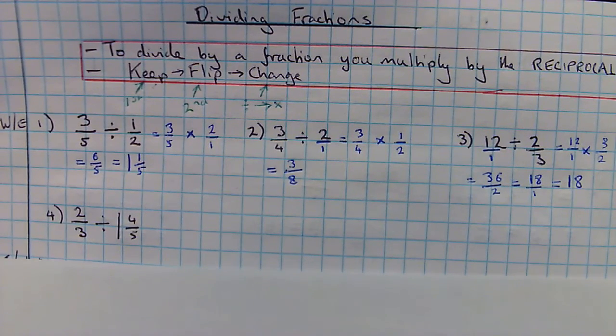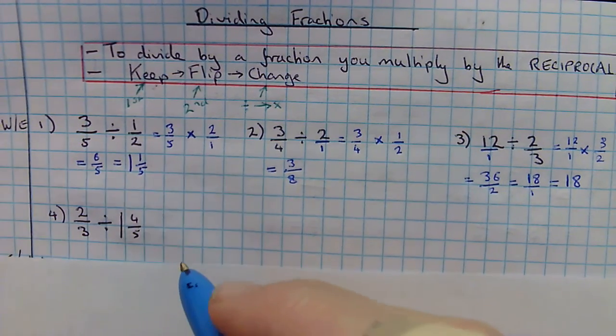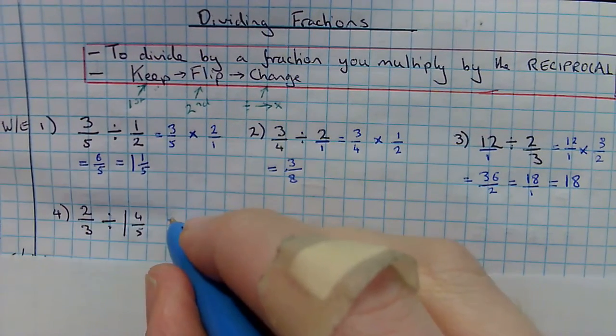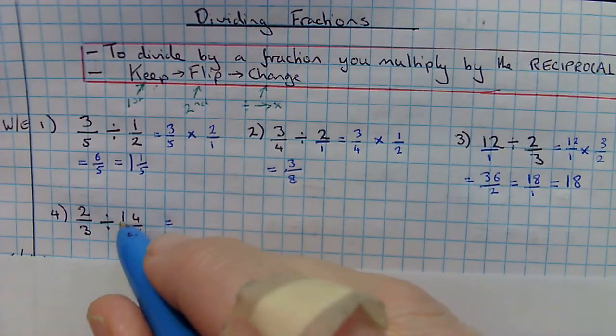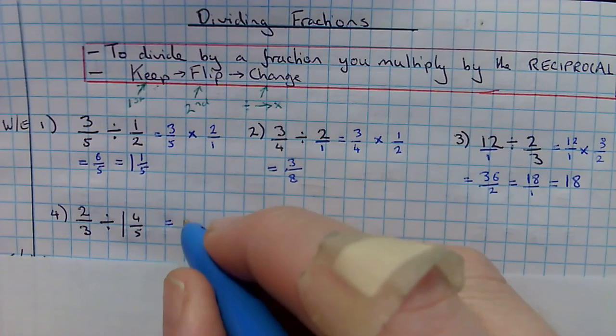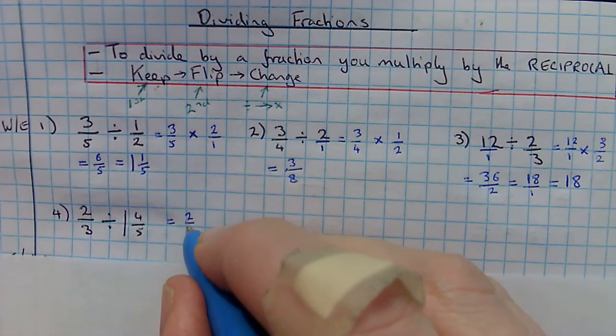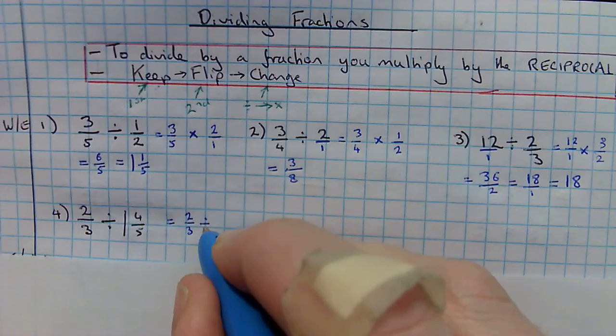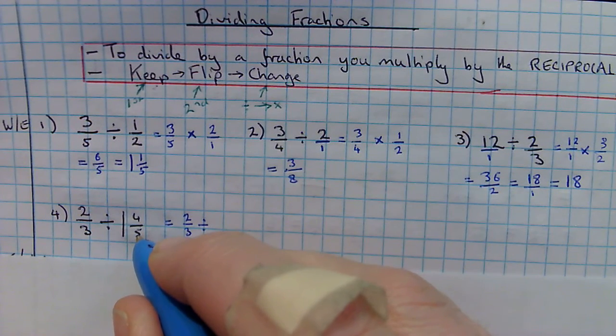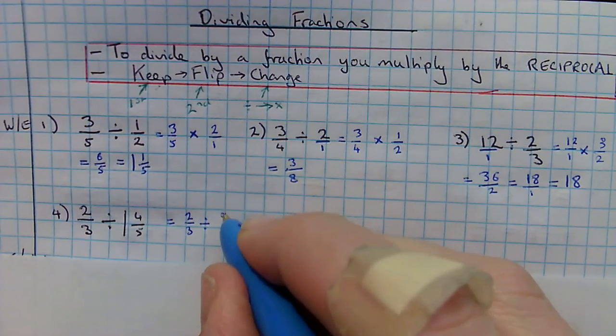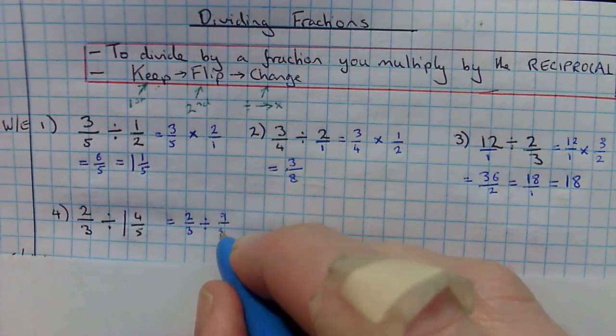The last one is the more complicated of them. I've got 2 thirds divided by 1 and 4 fifths. So, first thing I need to do is change that to an improper fraction. So, it's 2 thirds divided by... 1 times 5 is 5. Add 4, which is 9. Divided by 9 over 5.